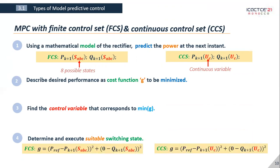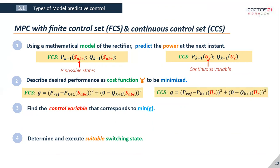Then we must express the cost function in terms of the control variable for each type and now it's time to minimize it. For FCS, we could just simply calculate the cost function for each state individually.